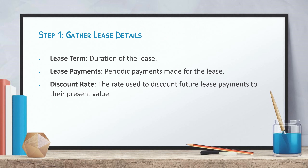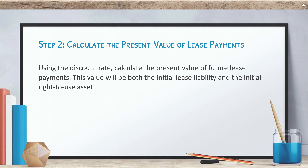To create an amortization schedule for a lease under GASB 87, follow these steps. Step one: gather lease details, including the lease term (duration of the lease), lease payments (periodic payments made for the lease), and the discount rate (the rate used to discount future lease payments to their present value).